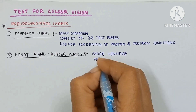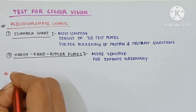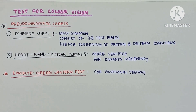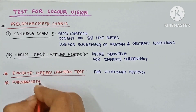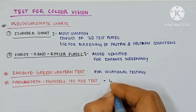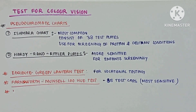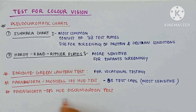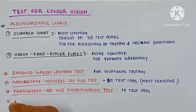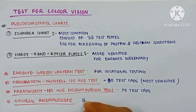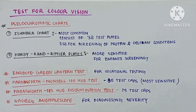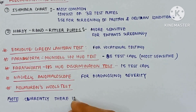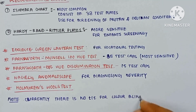The Hardy-Rand-Rittler plate is more sensitive and used for infant screening. The Edridge-Green lantern test is used for vocational testing. The Farnsworth-Munsell 100 Hue Test contains 85 test caps and is the most sensitive test. The Farnsworth D-15 Hue Discrimination Test contains 15 test caps. The Nagel's anomaloscope is used for diagnosing the severity of cases. The Holmgren wool test is also used. Please note that currently there is no treatment for color blindness.